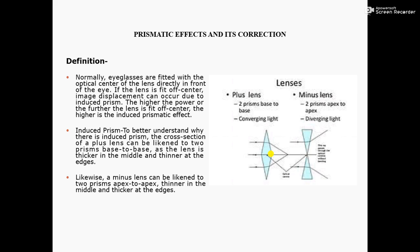A prism effect can be obtained at the center of the eye if the edge thickness on one side of the lens is made thicker than the other side.